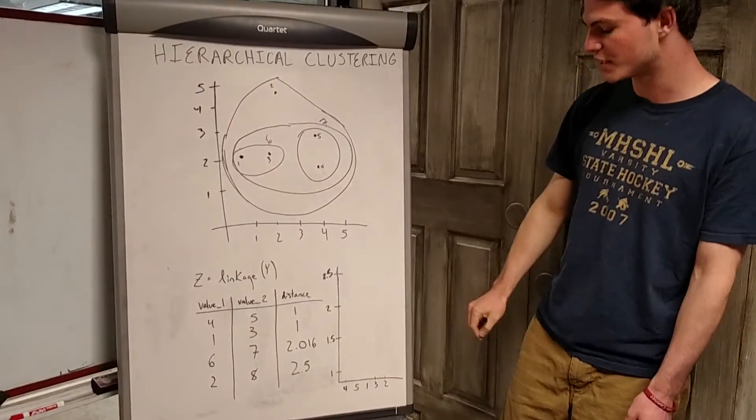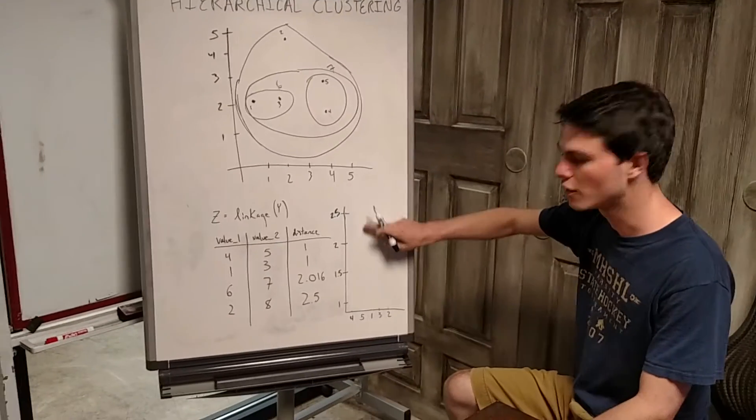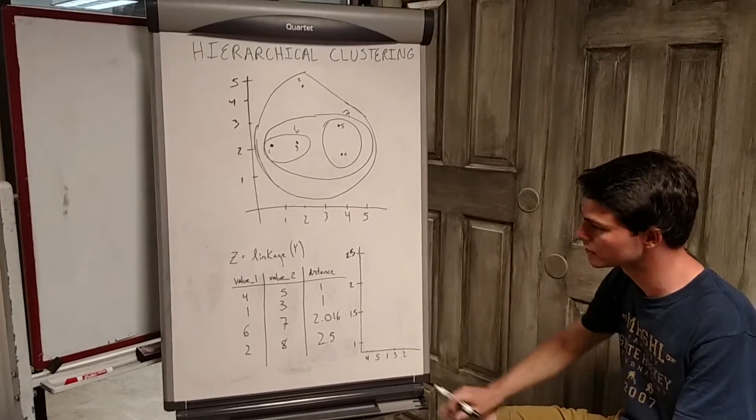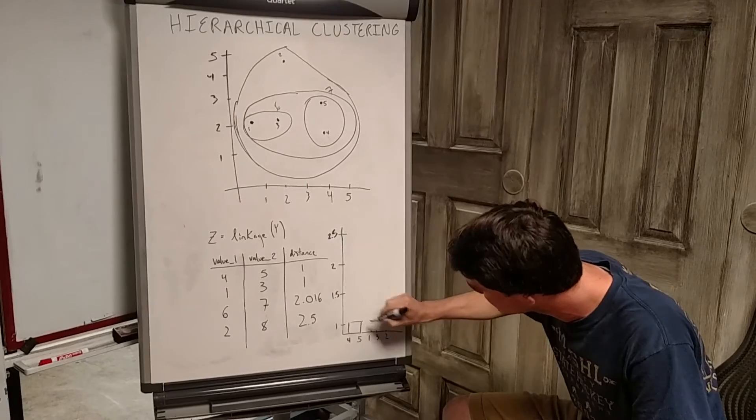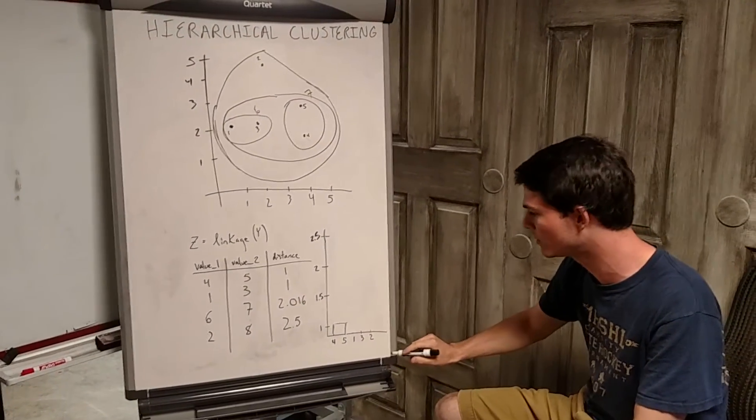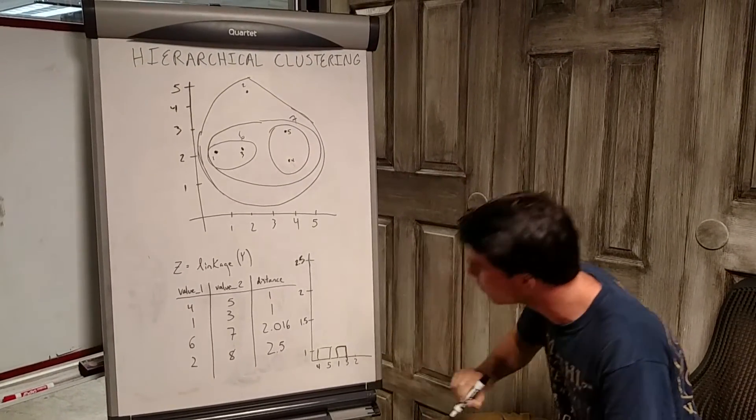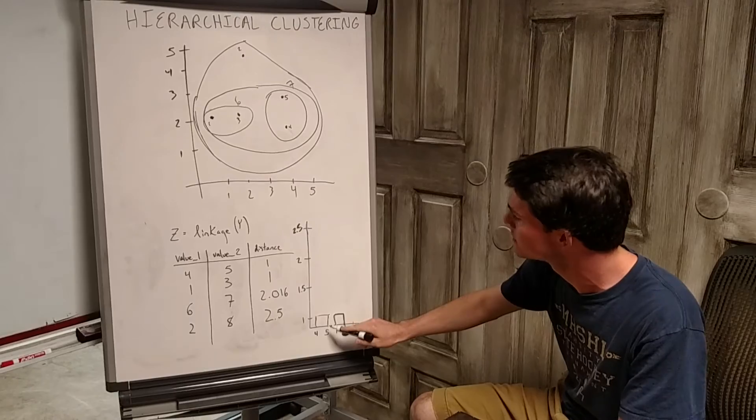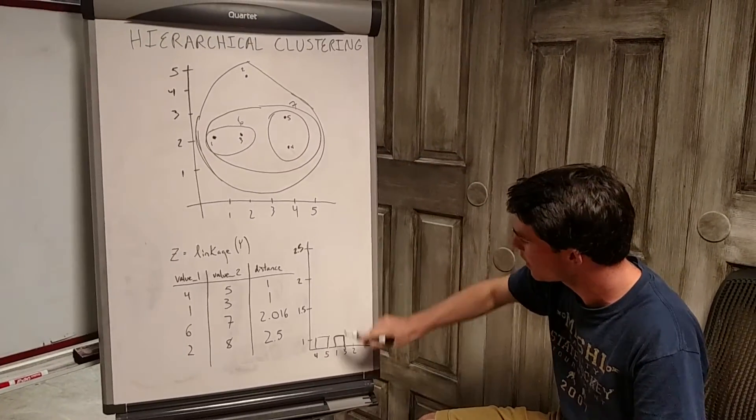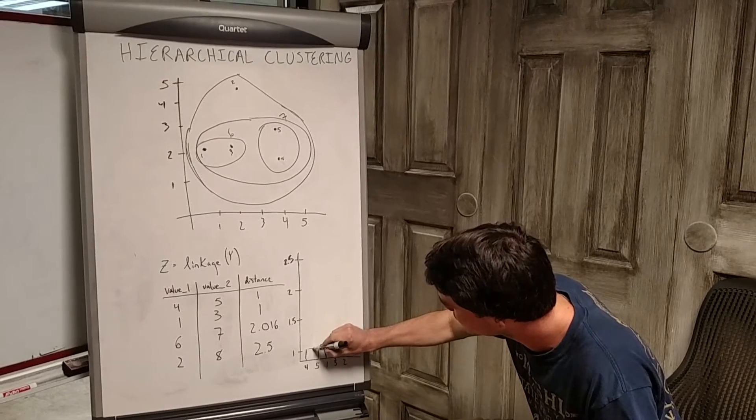Now how would these values be represented in a dendrogram? Recall that a dendrogram is a binary tree classifier that shows the distance between points on the y-axis and those given points on the x-axis. The distance between four and five is one. The distance between one and three is one. The distance between this cluster and that cluster is roughly just over two.